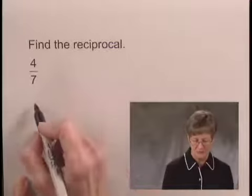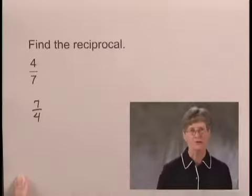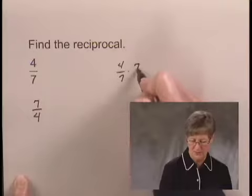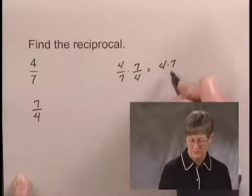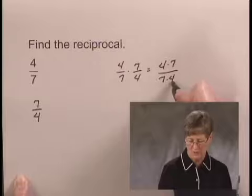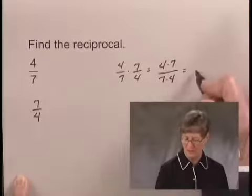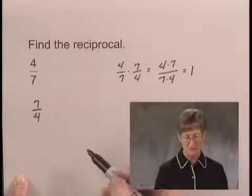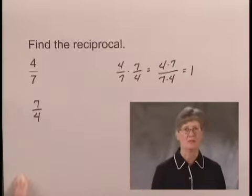So the reciprocal of 4 over 7 is 7 over 4. And we can show that this is indeed the reciprocal if we multiply 4 over 7 and 7 over 4 — multiplying numerators and denominators, we have the same number in the numerator and denominator, so this is equal to 1. So we say that the reciprocal of 4 sevenths is 7 fourths.